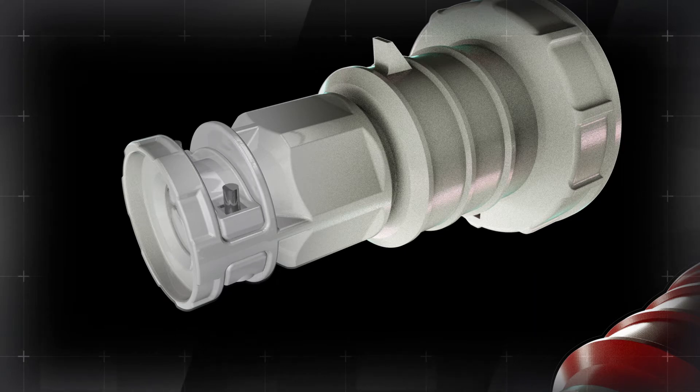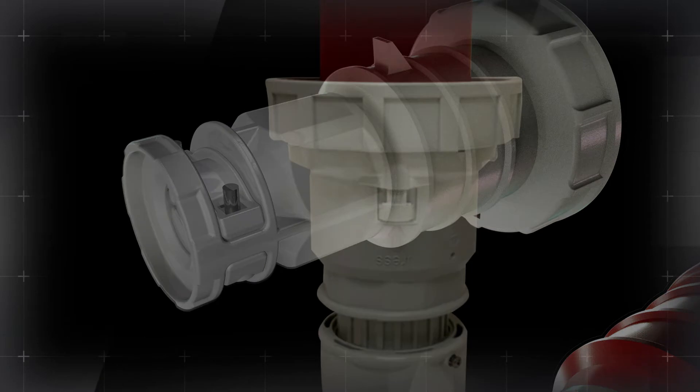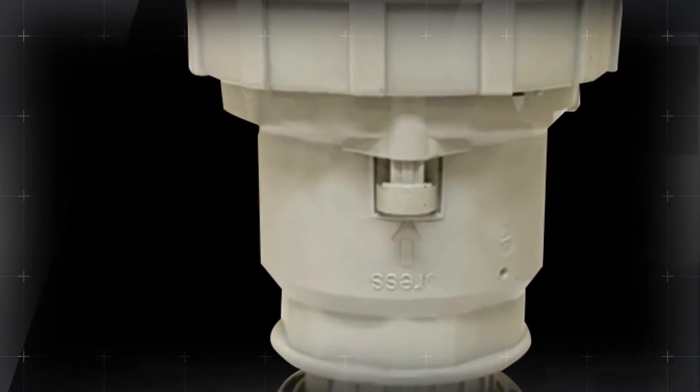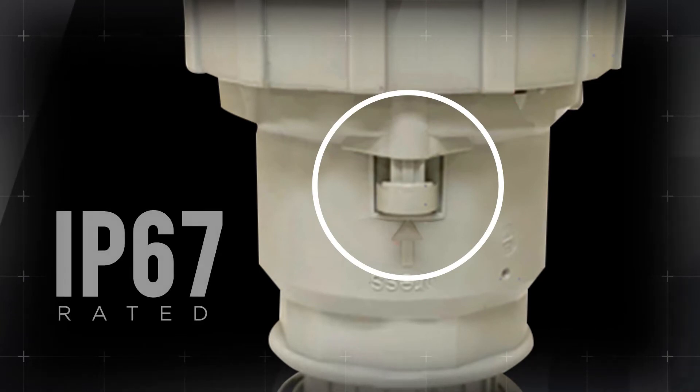This design allows for easy inspection and eliminates the need to open the housing. 60-amp and 100-amp plugs and connectors have a two-piece housing that is secured with a single locking tab, providing IP67 water ingress protection.